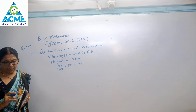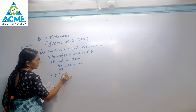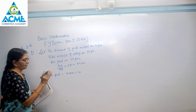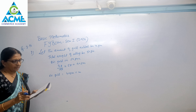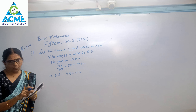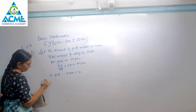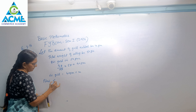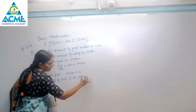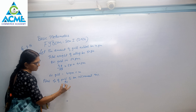So the gold is equal to 40 grams plus x, where x is the amount to be added. Now, what does the next condition say? The total gold should be increased to 90%. So the percentage of gold to be increased is 90%, which means 90 upon 100.